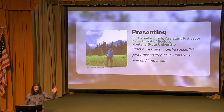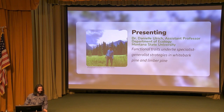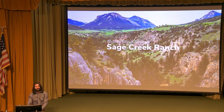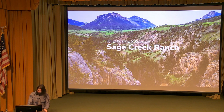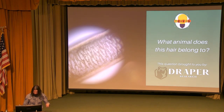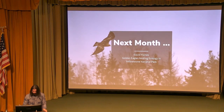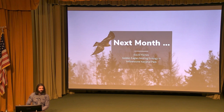Our quick trivia answers: the first question was what animal does this belong to - it was a pronghorn. The two billion years of rock missing outside of Cody is called the Great Unconformity. Check out our YouTube series Layers with Larry to learn more. And our final trivia question: today's range of yellowstone cutthroat trout is about 17% of their former range.